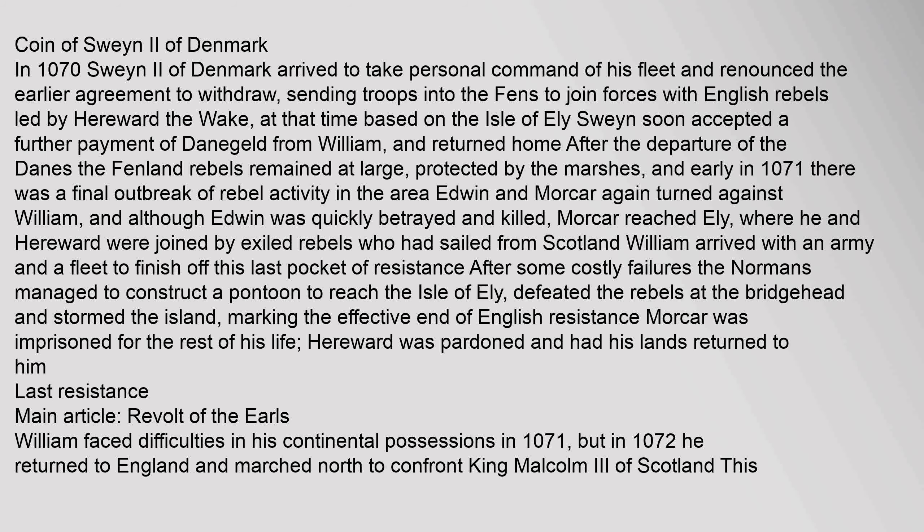In 1070, Swein II of Denmark arrived to take personal command of his fleet and renounced the earlier agreement to withdraw, sending troops into the Fens to join forces with English rebels led by Hereward the Wake, at that time based on the Isle of Ely. Swein soon accepted a further payment of Danegeld from William and returned home. After the departure of the Danes, the fenland rebels remained at large, protected by the marshes. Early in 1071, Edwin and Morcar again turned against William. Although Edwin was quickly betrayed and killed, Morcar reached Ely, where he and Hereward were joined by exiled rebels. William arrived with an army and a fleet to finish off this last pocket of resistance. After some costly failures, the Normans managed to construct a pontoon to reach the Isle of Ely, defeated the rebels at the bridgehead and stormed the island, marking the effective end of English resistance. Morcar was imprisoned for the rest of his life; Hereward was pardoned and had his lands returned to him.